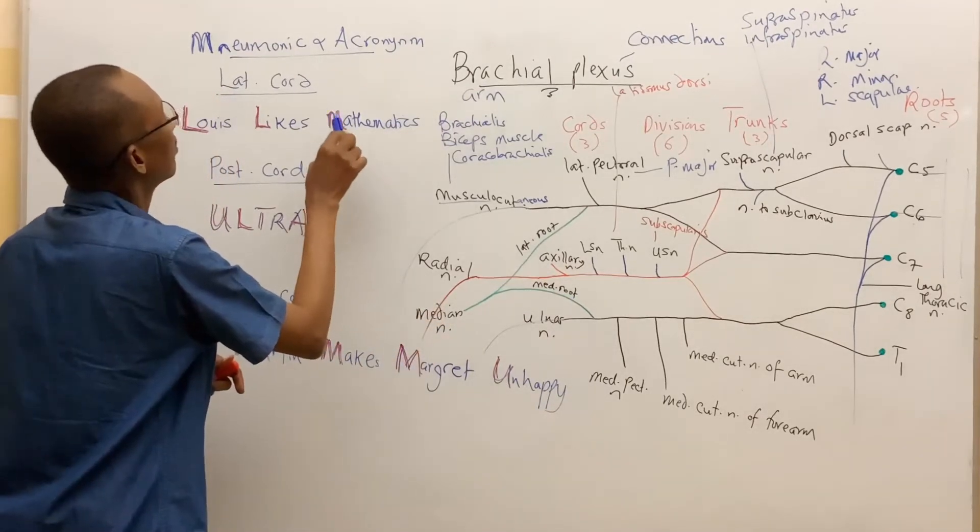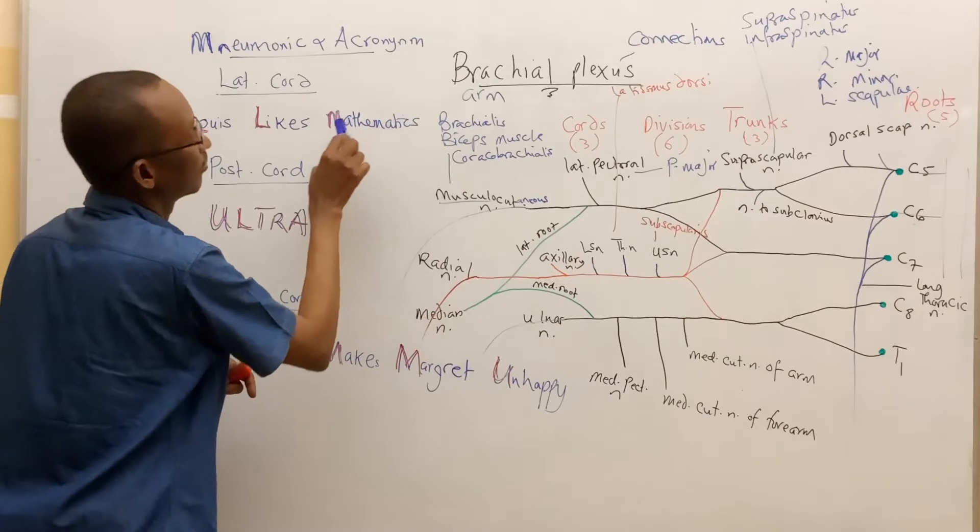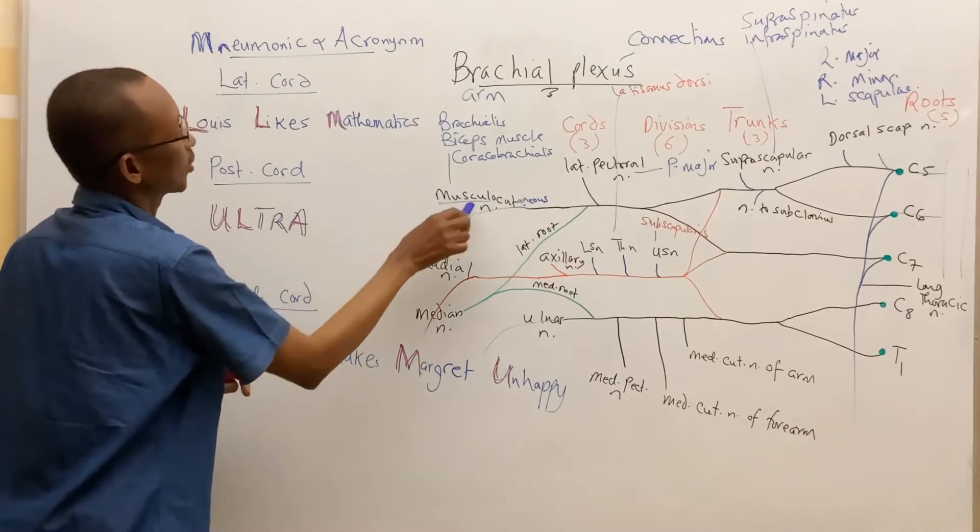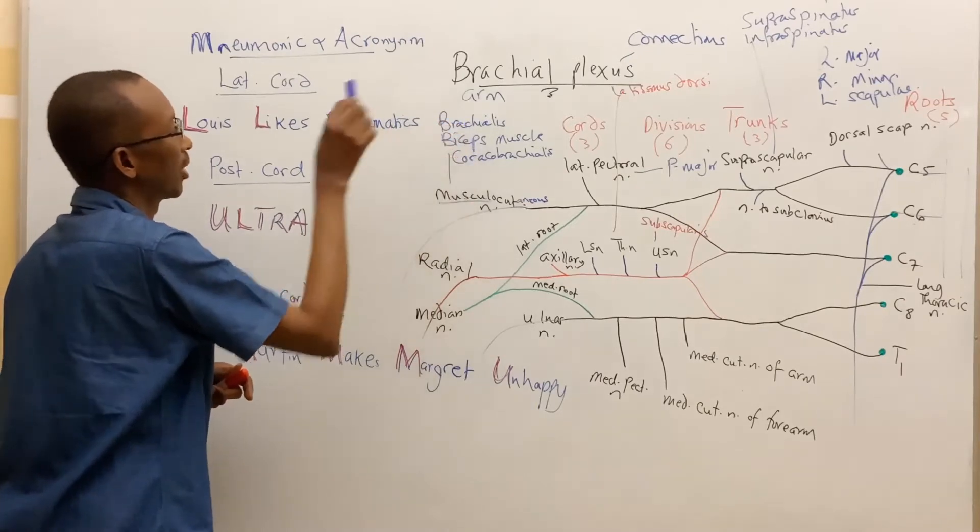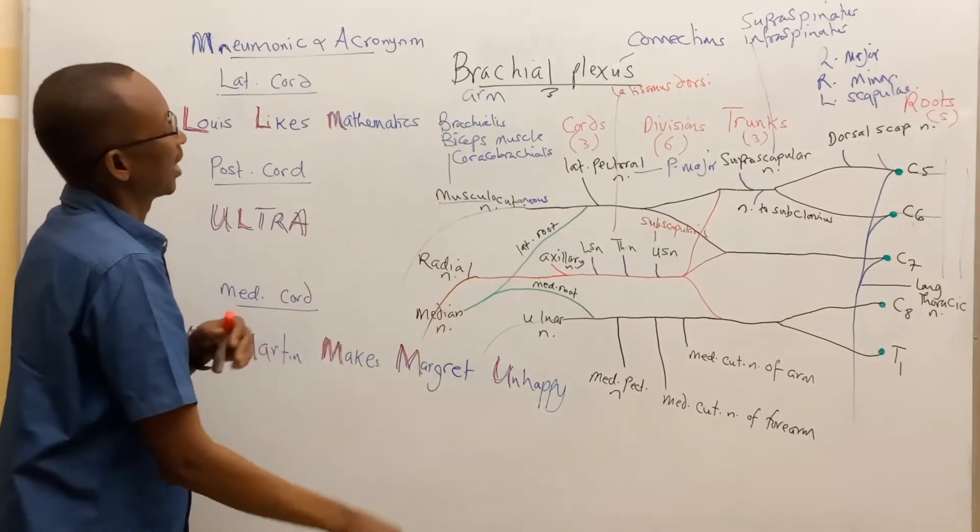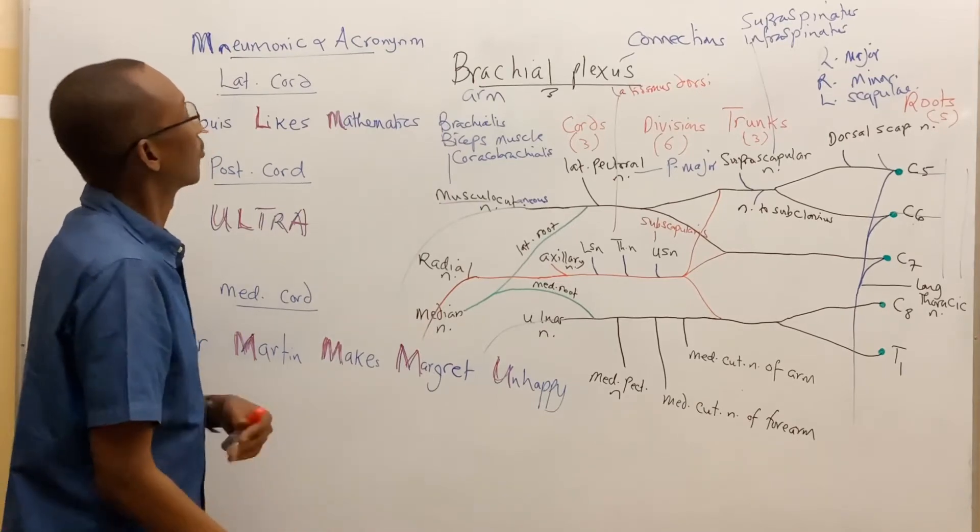M for mathematics, M for musculocutaneous nerve. The musculocutaneous nerve, I already said, supplies the brachialis, biceps, and coracobrachialis muscles, and it also supplies the skin of the lateral side of the forearm.